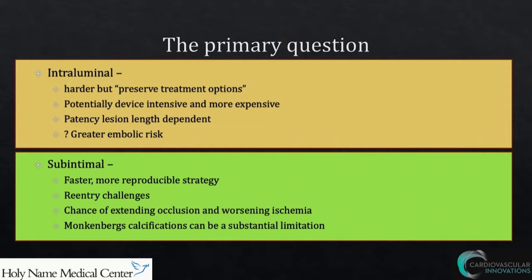You're going to see why we do what we do and how it works for us. Clearly this is the primary question — whether you need to be or want to be intraluminal, where you can theoretically preserve treatment options. Intraluminal is potentially device-intensive and more expensive. I published on the treatment algorithm for SFA using the CADENCE approach, where the E in CADENCE is economic considerations. We're making economic decisions in the cath lab on a regular basis, so that's an additional burden for intraluminal CTO devices.